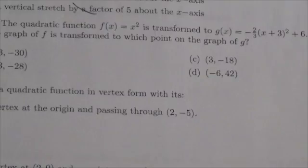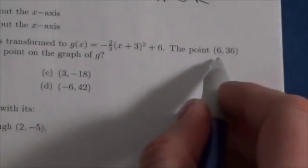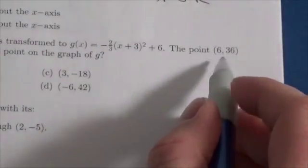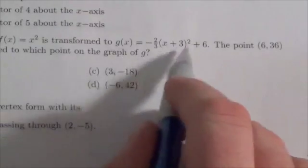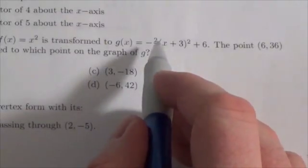Okay, so what we're going to do here is we're taking (6,36) and we're going to transform it. Now the transformations here, when you take a look at those, we've got to just identify what's going on here.